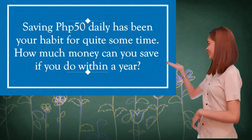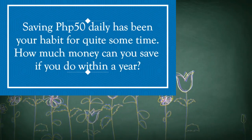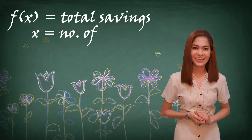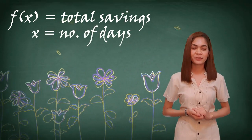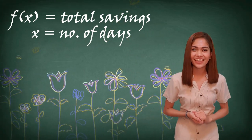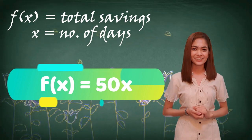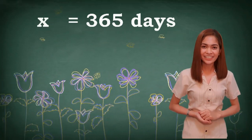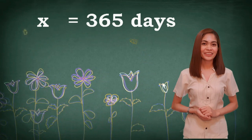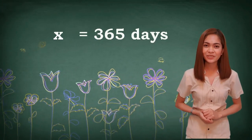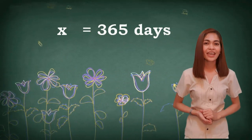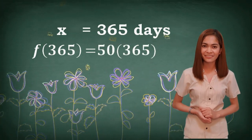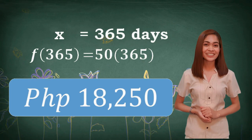Say f(x) is your total savings and x is the number of days you saved money. Then our function would be f(x) = 50x. A year has an average of 365 days, so the value of x will be 365. To evaluate this function, we substitute the value of x: f(365) = 50 × 365, which equals 18,250 pesos.